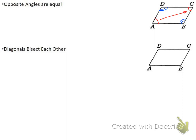The last property is that the diagonals bisect each other. If you draw the diagonals AC and BD on your parallelogram, both diagonals are going to be cut in half by each other. So if I named the midpoint M, I could say that DM is equal to MB and AM is equal to MC.